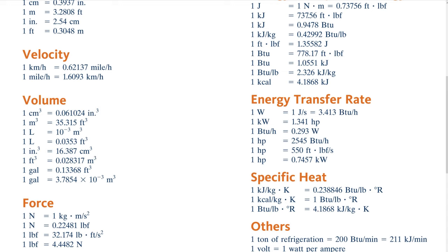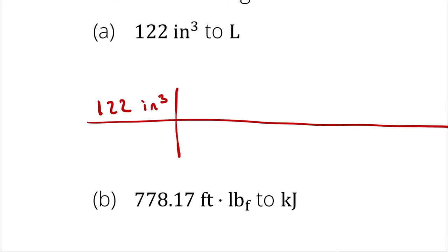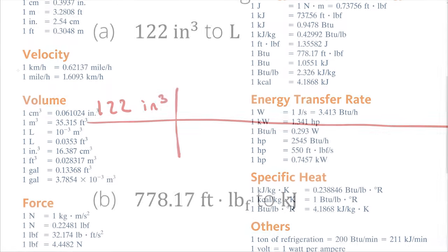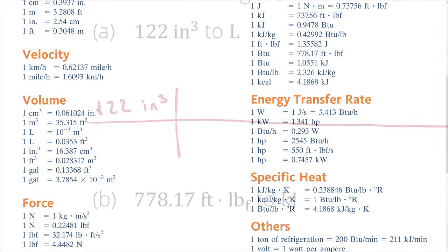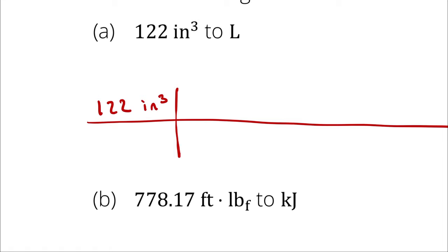I look up liters — I see one liter as cubic meters, a liter to cubic feet, and then if I look up cubic inches, I see cubic inches represented as cubic centimeters. None of those are what I want directly, which means I'll have to take some intermediate steps. I could go from cubic inches into cubic feet and then from cubic feet into liters. I could also go from cubic inches into cubic centimeters, then cubic meters, then into liters — that would also work.